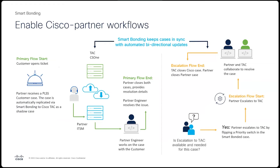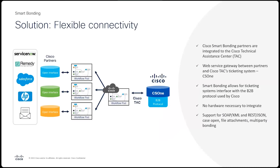Now let's talk about connectivity. A web service gateway is established between the two systems. This has been tested with the five major ITSMs on the market. The easiest integration is with ServiceNow, but if your ITSM can handle APIs and can support SOAP and REST, you will be able to Smart Bond with Cisco. Note that even though we support SOAP and REST, the recommendation is to do it through REST, as this will require less Cisco involvement and will allow you to move more quickly at your own pace.